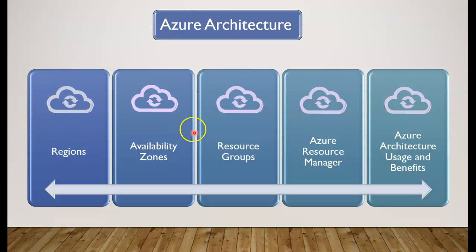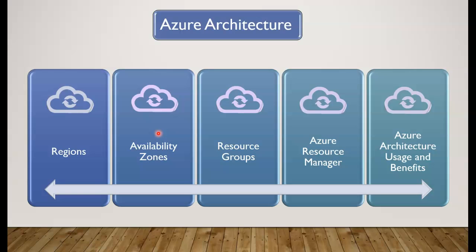Next, we will be looking into availability zones and we will see how an availability zone actually groups two or more data centers together, and we will see how there are multiple availability zones within a region. We will also take a look at how we can deploy certain Azure products and services to specific availability zones, so even if one is down within our region, the other can still be up and running and servicing our requests for our applications.